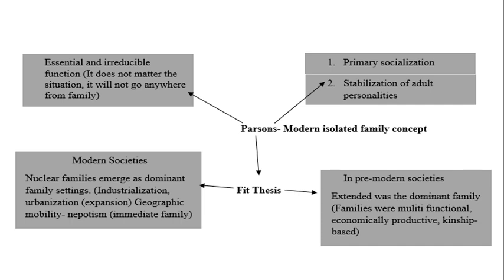In contrast, in industrial society from the 1800s in the UK, the isolated nuclear family consisting of parents and children became the norm. This type of family fits industrial society because it requires a mobile workforce. The extended family was too difficult to move, and families needed to relocate to find work to meet the requirements of a rapidly changing and growing economy.